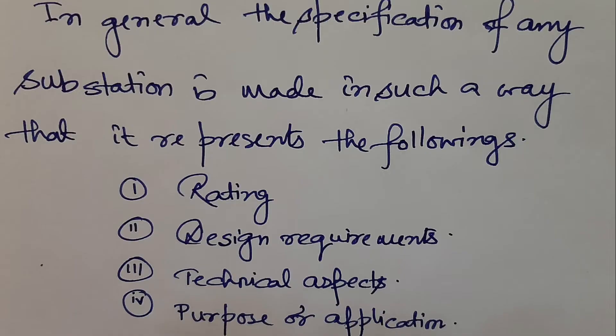While defining the specification of any substation, it shall be made in such a way that it represents at least the following: number one is rating — meaning the voltage rating, the power rating, the frequency, fault current, etc. Number two is design requirements — whether it will be indoor or outdoor type, civil facilities, and other mechanical requirements. Then the technical aspects: where it is located, the ambient conditions, and the purpose — whether it is a receiving substation, distribution substation, generating substation, or load center substation.